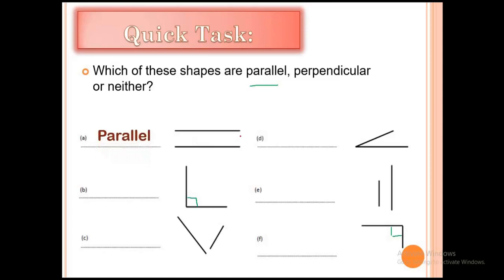For question B, we have two lines that meet and make a right angle. When two lines meet at a right angle, that means perpendicular. For the next one, these two lines don't meet and they're not parallel either.